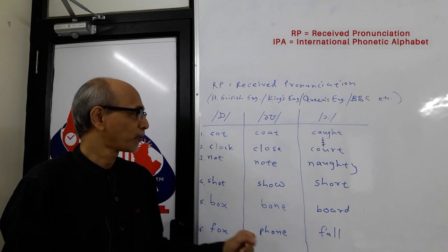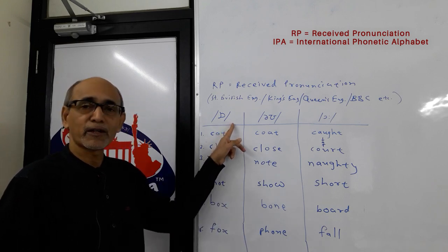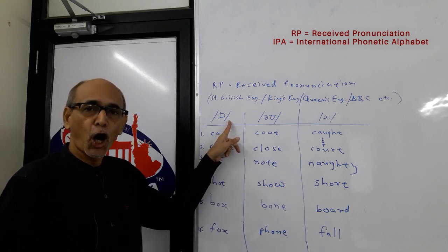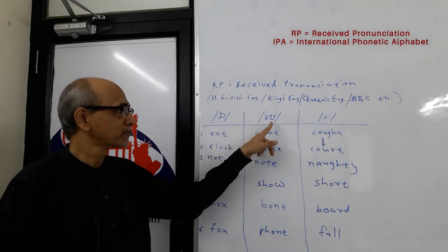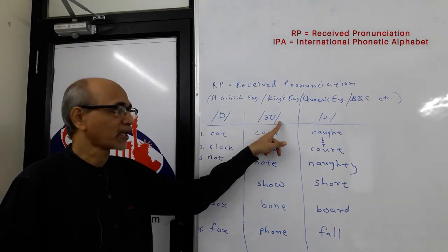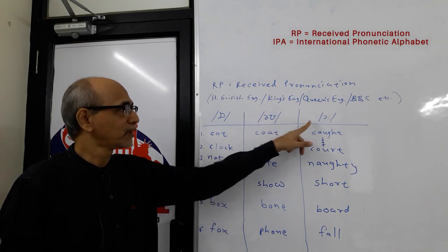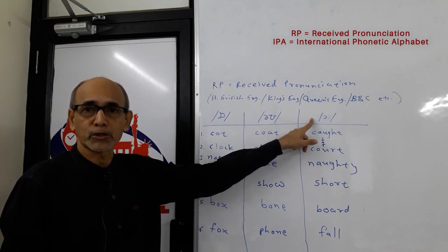So I hope it is clear now — the three different sounds. The first is O as in HOT. The second is O as in HOME. The third is O as in WATER.